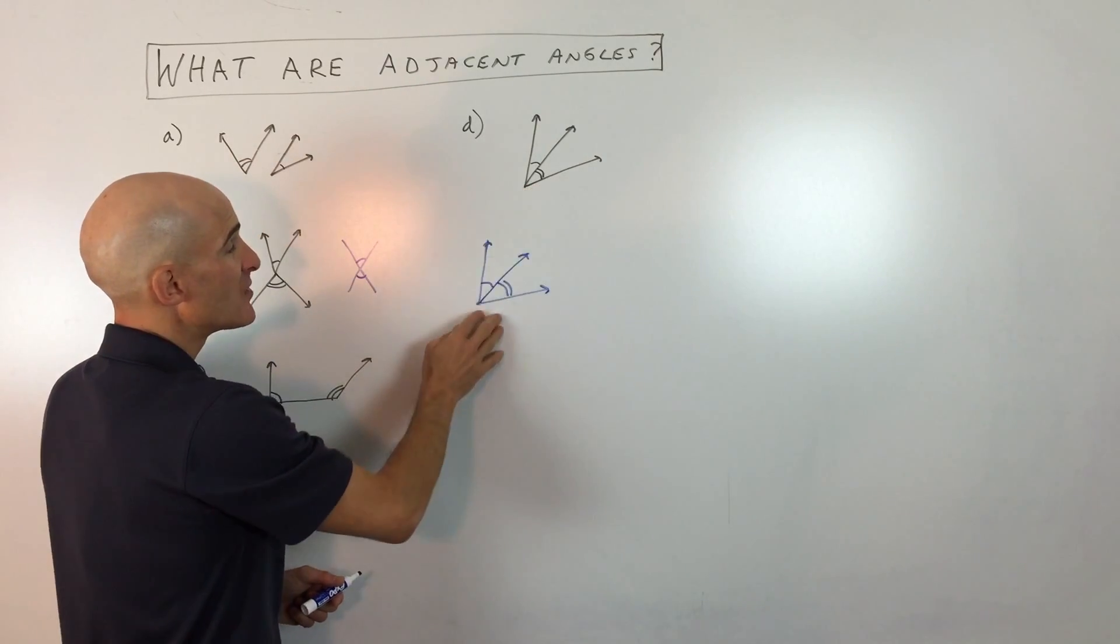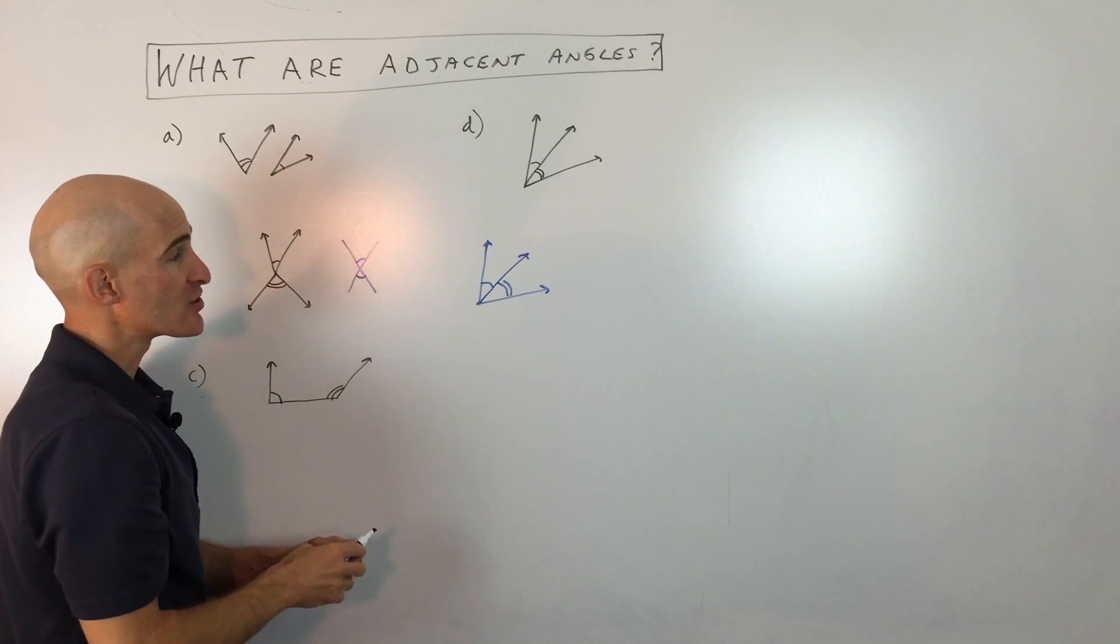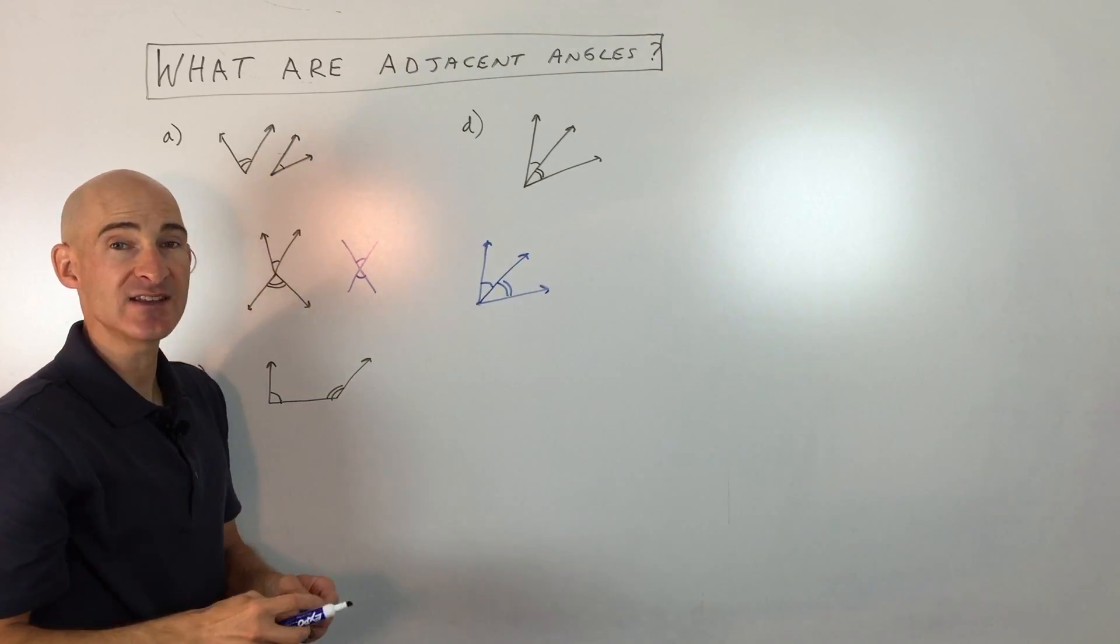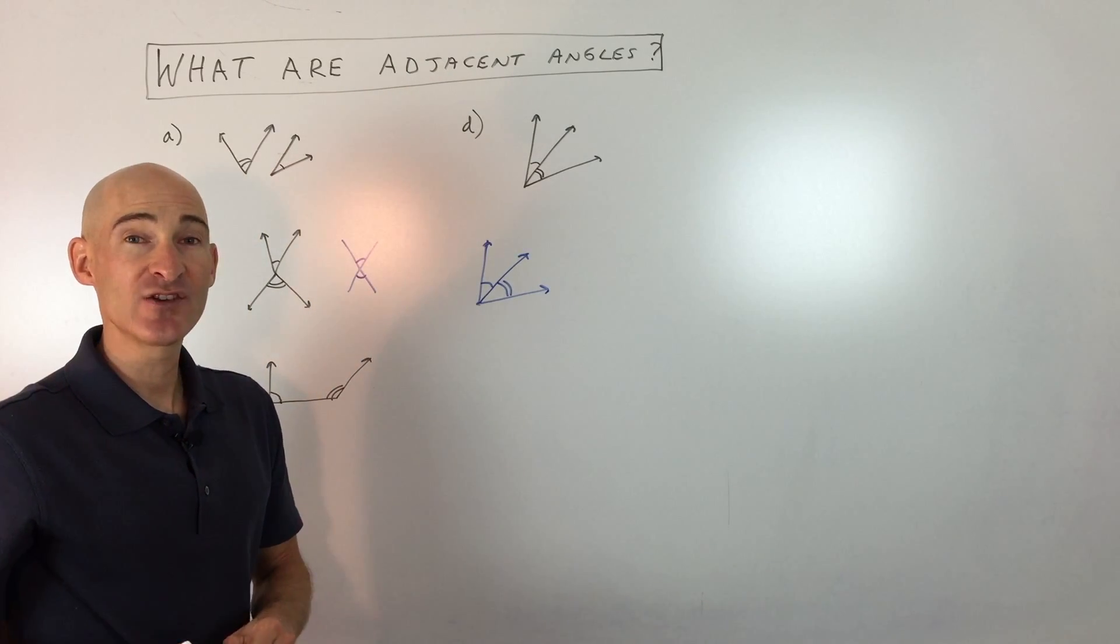And again, letter D would be the best scenario here. So they share that vertex, that hinge, and they're sharing one of the rays, the sides. So that's what you're looking for when you talk about adjacent angles.